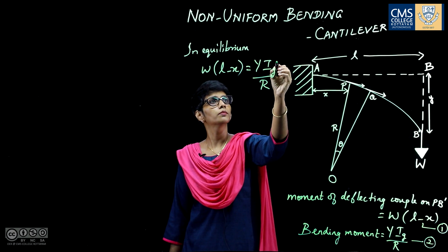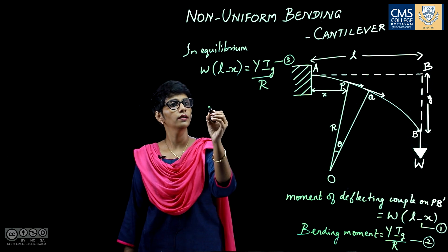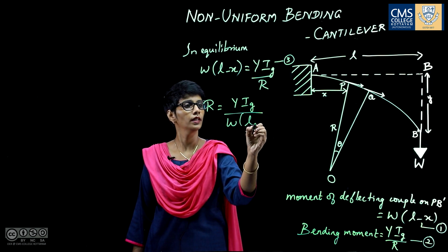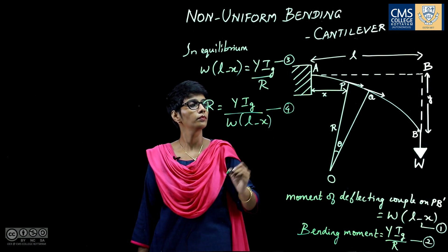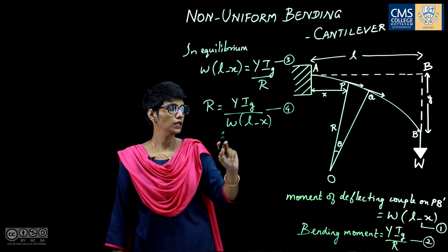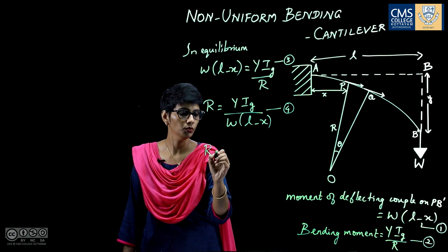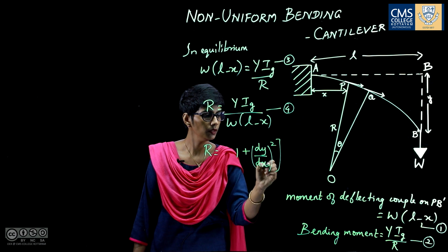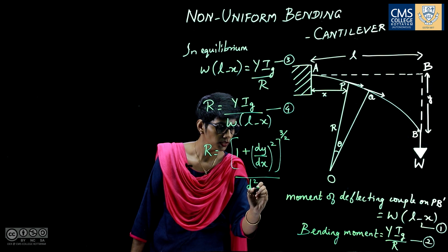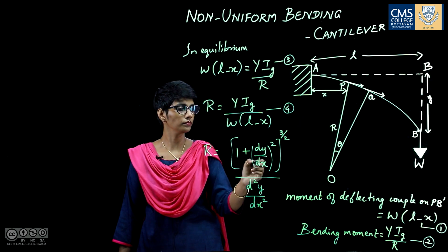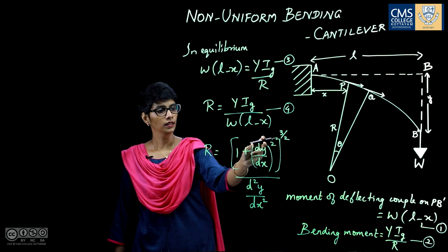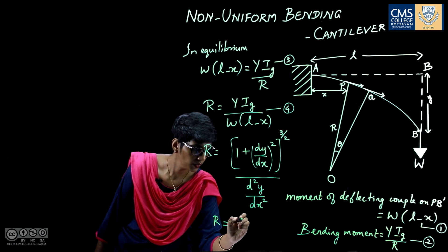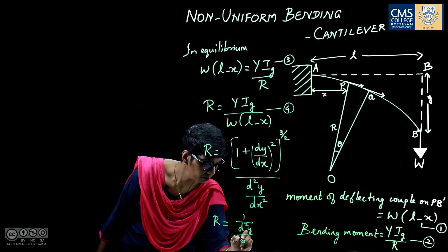From this we can write R = Y·IG / [W(L − X)]. The radius of curvature at this point can also be written as R = [1 + (dY/dX)²]^(3/2) divided by d²Y/dX². Since the depression is very small, the term (dY/dX)² can be neglected when compared to 1, so we get R = 1 / (d²Y/dX²). This is equation number 5.